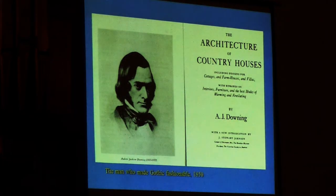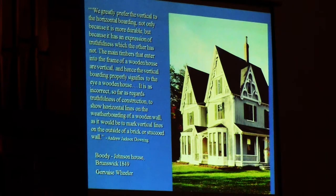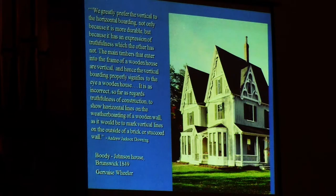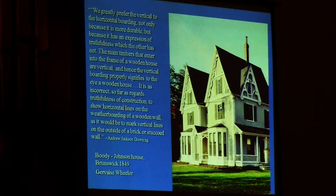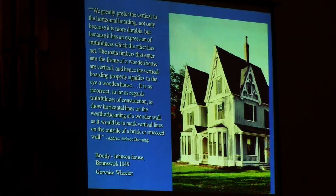A.J. Downing is the apostle of the Gothic. He says Gothic is morally more correct because it's not imitation marble — it's real wood. He says, "We greatly prefer vertical to horizontal boarding, not only because it's more durable, but because it has an expression of truthfulness which the other has not. The main timbers that enter into the frame of a wooden house are vertical, and hence vertical boarding properly signifies a wooden house." He's completely wrong in the sense that there are just as many horizontal floor beams as vertical wall studs, but that's his position — and that's how we get Board-and-Batten, which we see in churches.